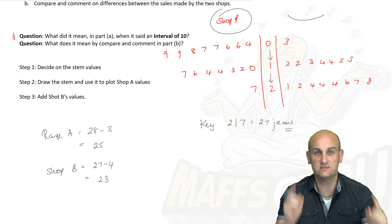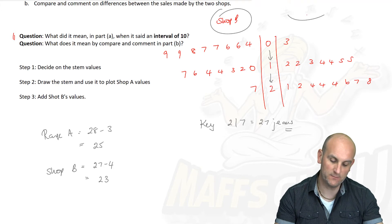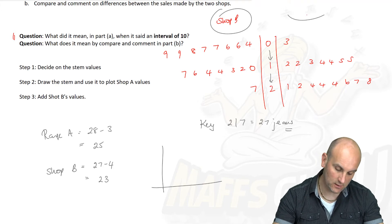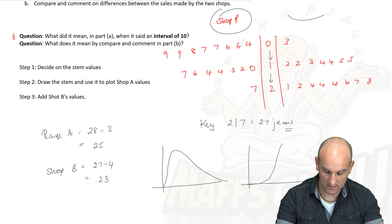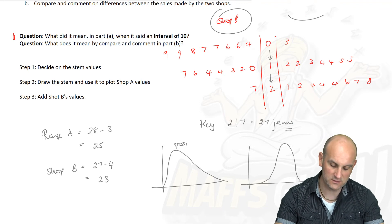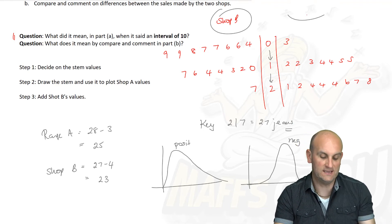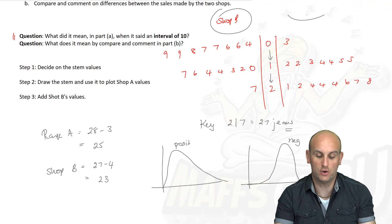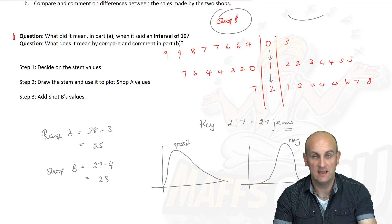We've got the lowest value was 4 and highest value was 27. 27 minus 4 gives me 23. So actually they sold roughly speaking the same range of jeans. But what do we notice about shop A in comparison to shop B? Shop B seems to look like this in terms of where their data is. Shop A seems to be like this. We would describe shop A had positively skewed data and shop B had negatively skewed data.